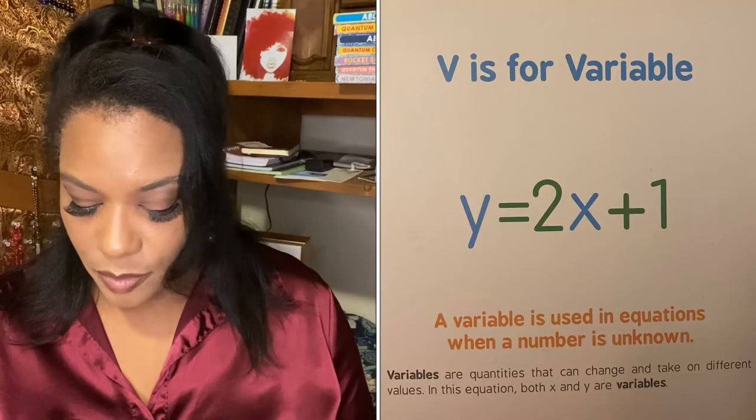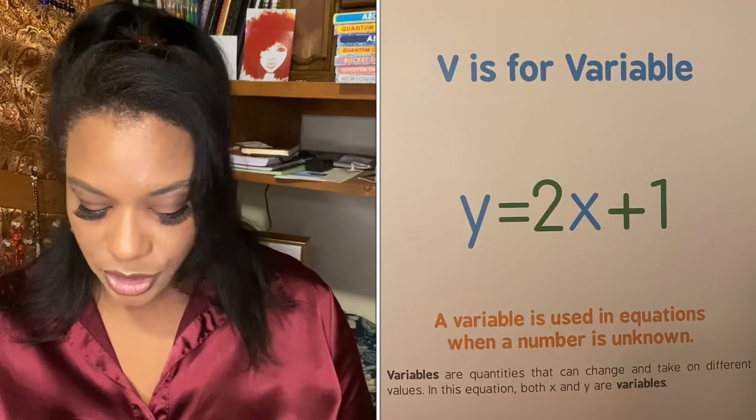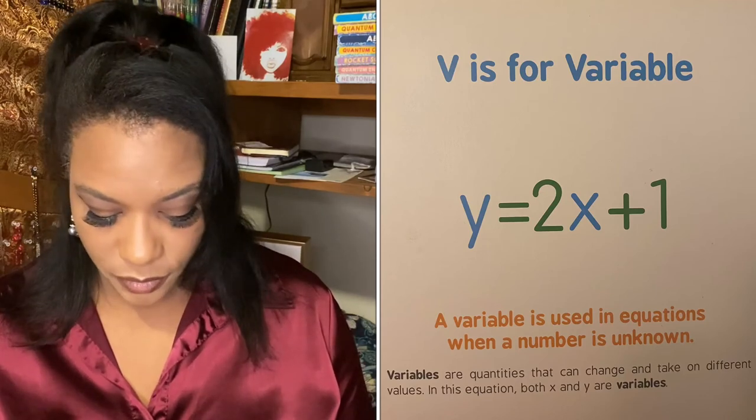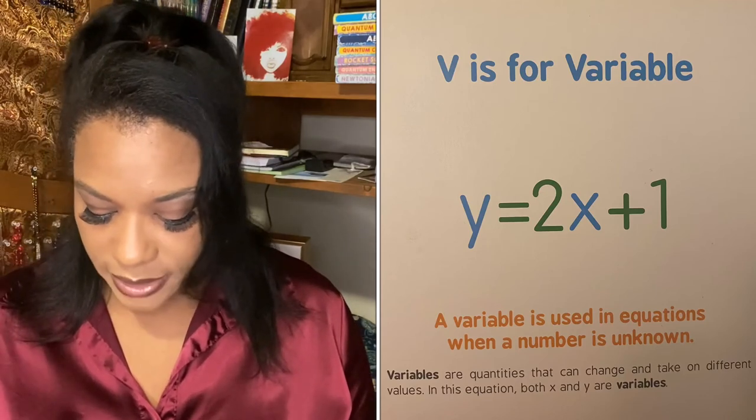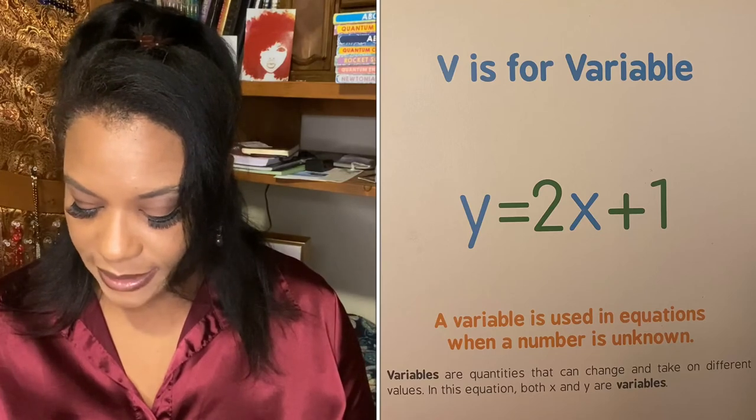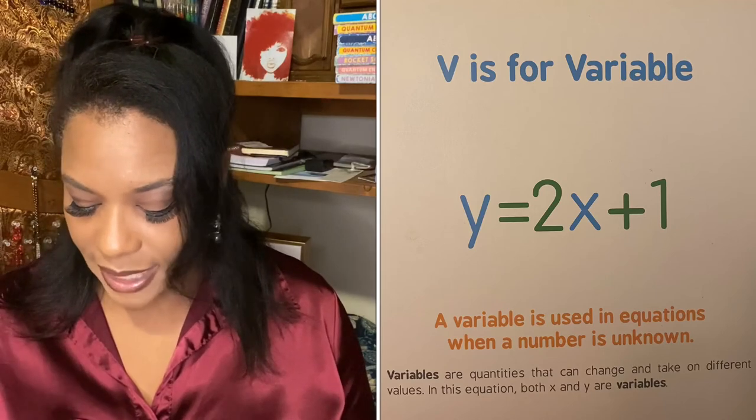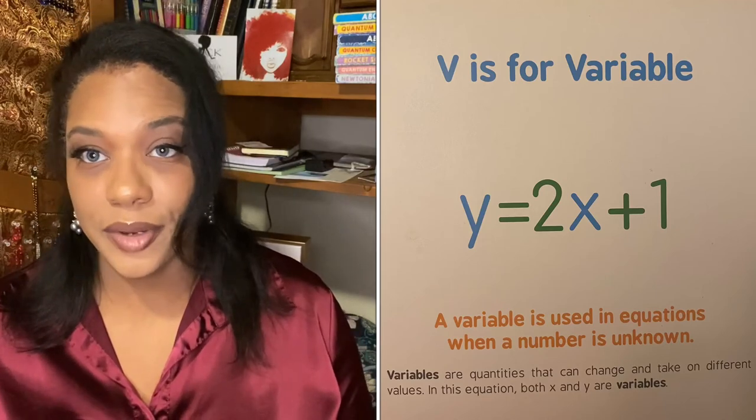V is for variable. A variable is used in equations when a number is unknown. Variables are quantities that can change and take on different values. In this equation, both x and y are variables.